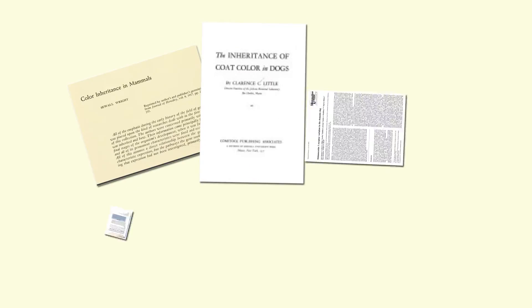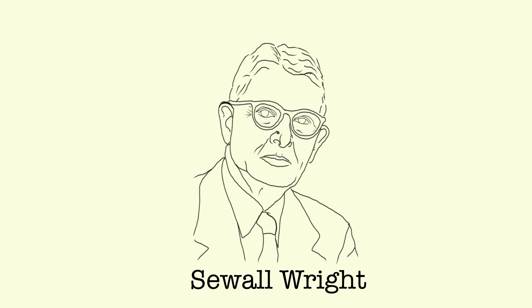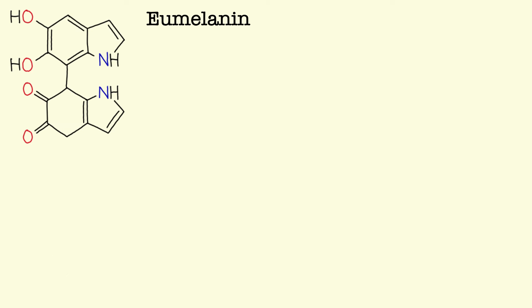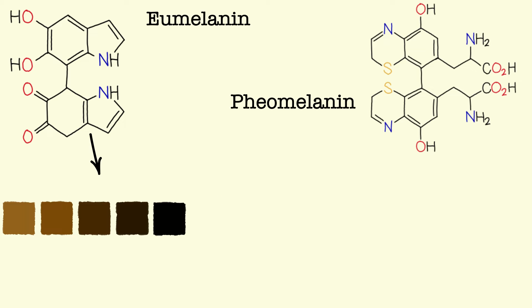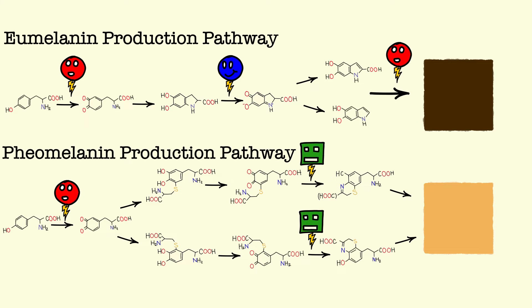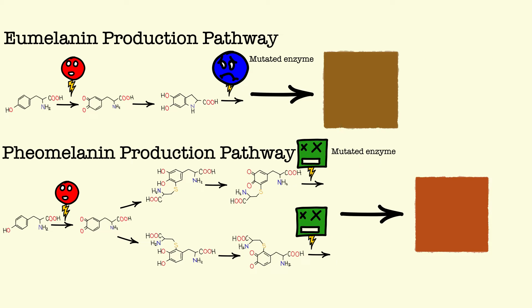Thanks to over 100 years of research into mammal coloration, including that of famous geneticist Sewall Wright, we have deduced the two responsible pigments: eumelanin and pheomelanin. Eumelanin can express colors ranging from light brown to black, while pheomelanin can express colors ranging from cream to dark red. Both pigments have complex production pathways with a variety of involved enzymes. Studies have shown that mutations along their respective production pathways explain some of the variation in colors expressed by both pigments.